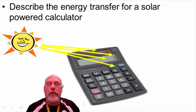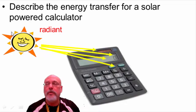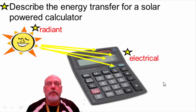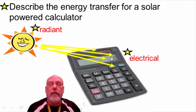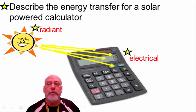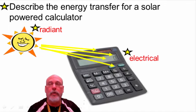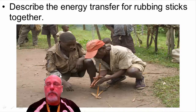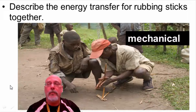A solar-powered calculator is a neat energy transformation. Radiant energy — light energy from the sun — goes into the solar panel and directly produces electrical energy. This is one of the few ways to produce electricity without a generator. It's a direct transfer from radiant energy to electrical energy. Another example: rubbing two sticks together is mechanical energy, which produces thermal energy — mechanical to thermal.